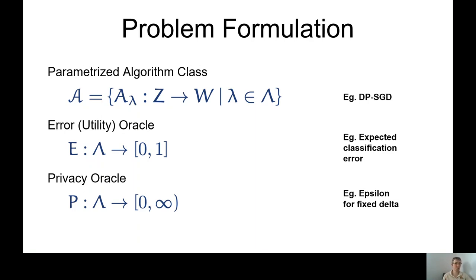So for this, we have a utility oracle. We also have a privacy oracle that returns a number between 0 and infinity, and that is the privacy measure for a given lambda, epsilon in case of differential privacy. I'm going to assume here that I have utility oracles in place, but later in the talk we'll go a little bit into the discussion of how they could be implemented.